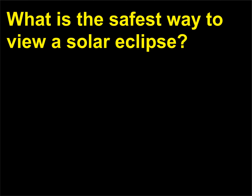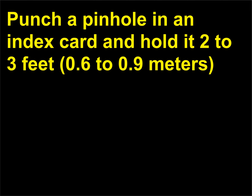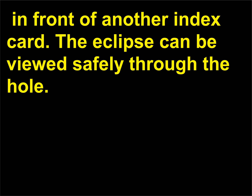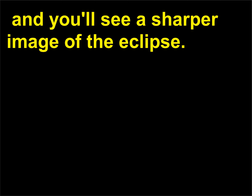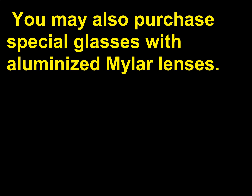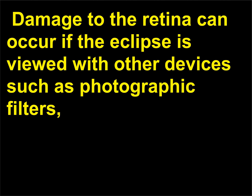What is the safest way to view a solar eclipse? Punch a pinhole in an index card and hold it 2 to 3 feet, 0.6 to 0.9 meters, in front of another index card; the eclipse can be viewed safely through the hole. Encase the index card contraption in a box, using aluminum foil with a pinhole. You may also purchase special glasses with aluminized mylar lenses. Damage to the retina can occur if the eclipse is viewed with other devices such as photographic filters, exposed film, smoked glass, camera lenses, telescopes, or binoculars.